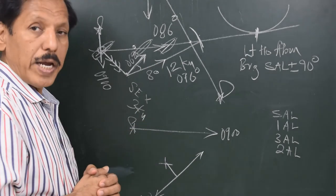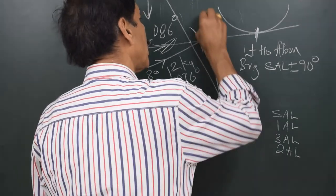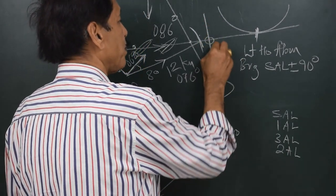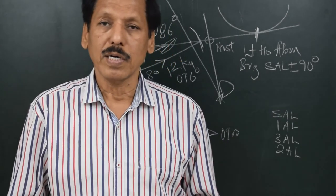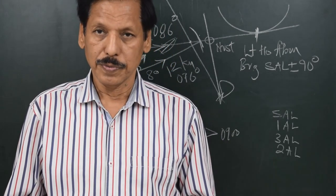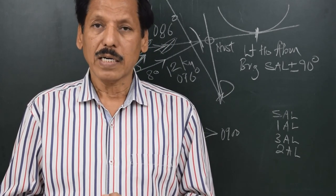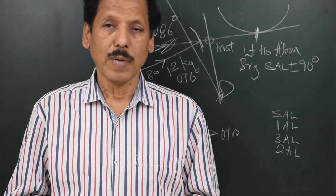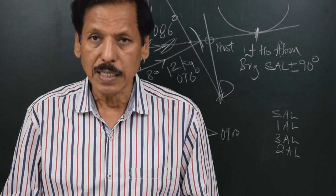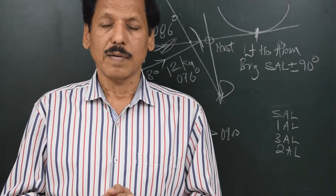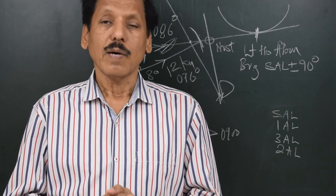The two-arrow line is 086, and 086 plus 90 is 176, so when the light is at 176 it will be nearest. The ETA is always calculated using Speed Made Good. So to summarize: abeam means small arrow line plus or minus 90, nearest means two-arrow line plus or minus 90, plus means starboard side and minus means port side, and ETA is always calculated by Speed Made Good.